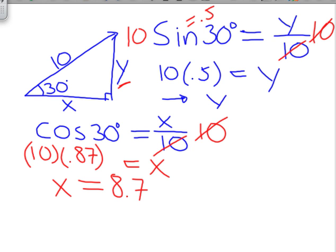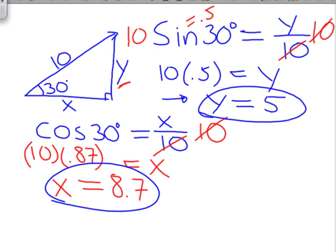Therefore, y equals 5. So now we have found the two sides of this triangle. The y component is 5, the x component is 8.7. We have broken this vector into its x component and y component.